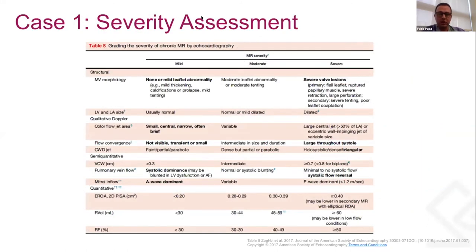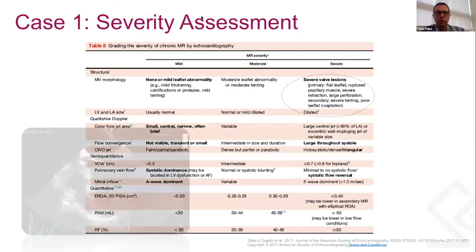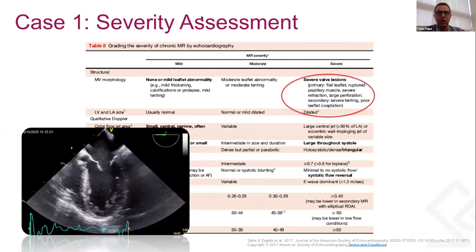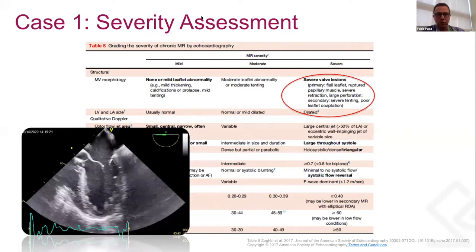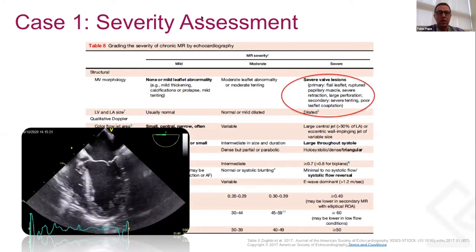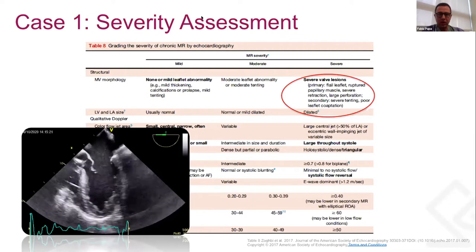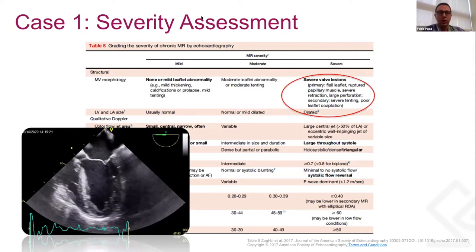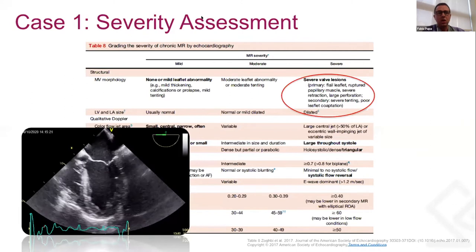Following the 2017 ASC guidelines, we should use an integrative approach with all the different parameters to get a good assessment of mitral regurgitation. We should use morphological assessment — looking at the valves, how the leaflets are working, whether there is pathology in the leaflets or in the mitral valve apparatus. We can see here the leaflets are really restricted in motion, especially the posterior leaflet, resulting in a poor coaptation line. We can also evaluate LV size and left-sided indices as indirect signs of mitral regurgitation.